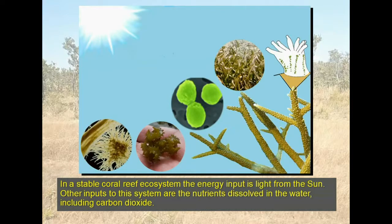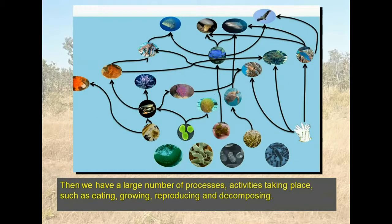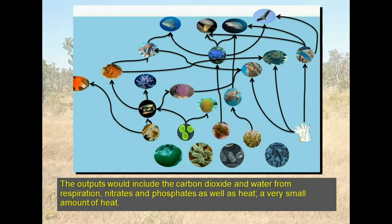In a stable coral reef ecosystem, the energy input is light from the sun. Other inputs to this system are the nutrients dissolved in the water, including carbon dioxide. There are a large number of processes and activities taking place, such as eating, growing, reproducing, and decomposing. The outputs would include carbon dioxide and water from respiration, nitrates and phosphates, as well as a very small amount of heat.